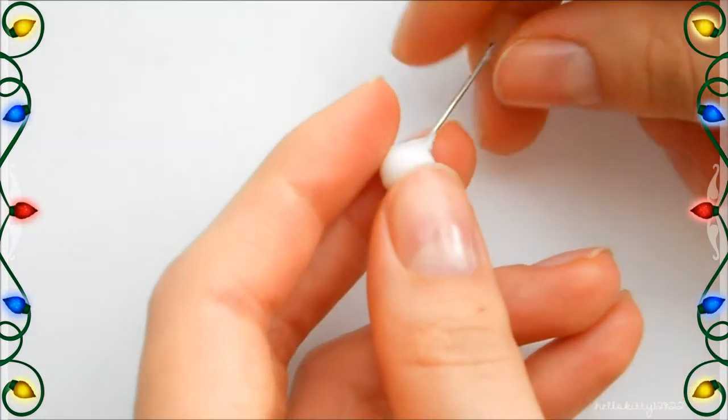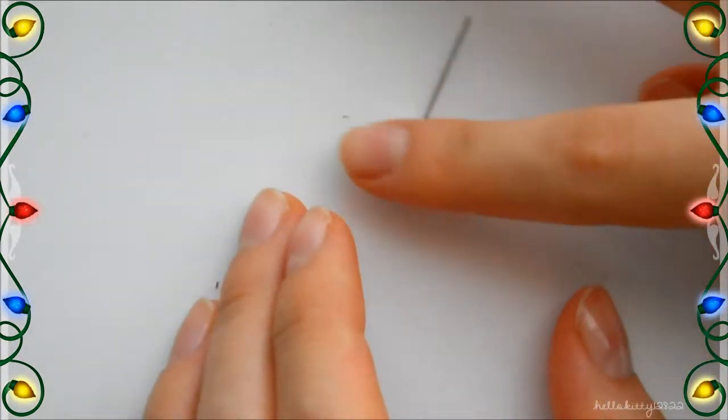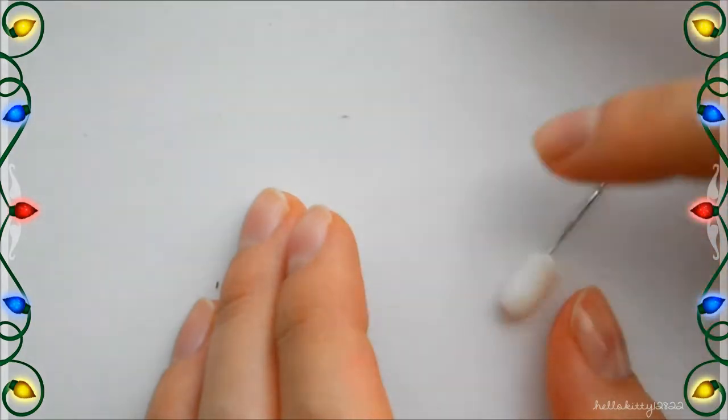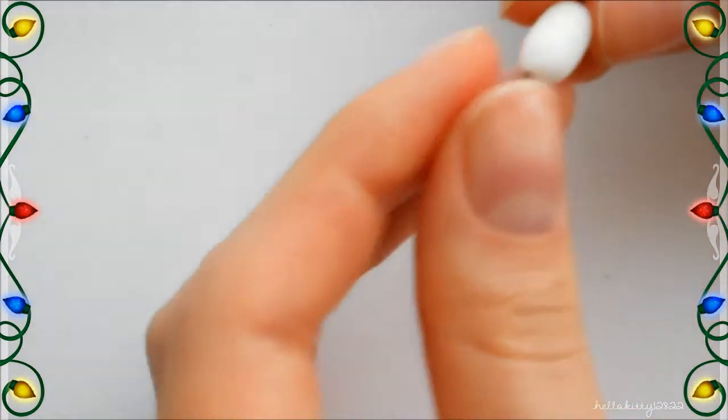I'm going to roll it across my table and then start to pinch the bottom of it to create that light bulb shape.